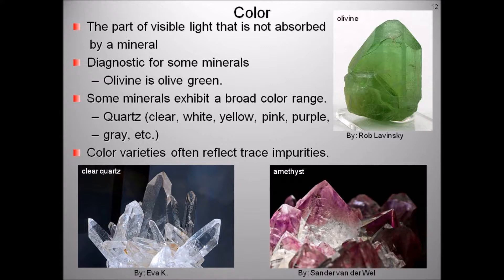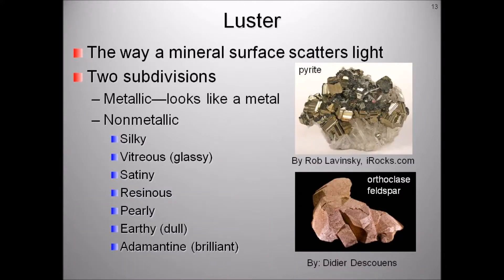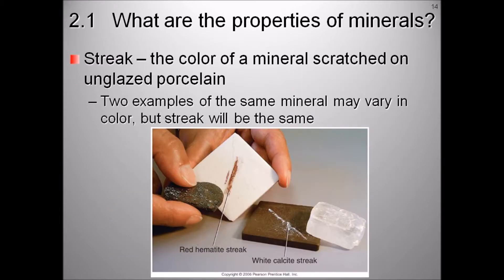Luster is simply how light reflects from a mineral's surface. There are two luster subdivisions: metallic and non-metallic. An example of a mineral that has a metallic sheen is pyrite. Minerals with non-metallic sheen are described as silky, vitreous or glassy, satiny, resinous, pearly, earthy, adamantine, or brilliant. Orthoclase feldspar is a non-metallic mineral with a pearly luster.